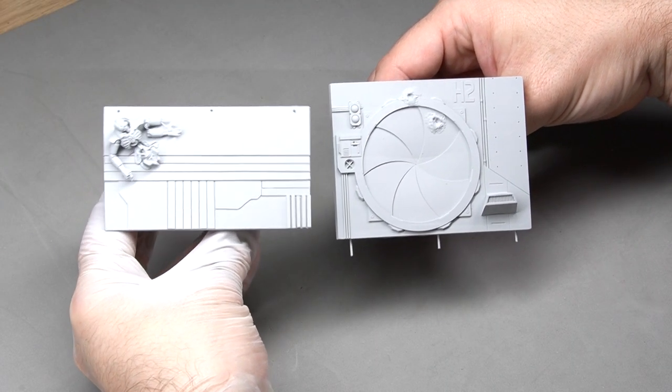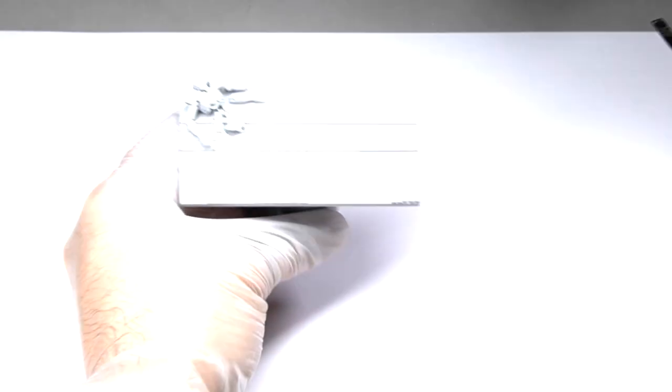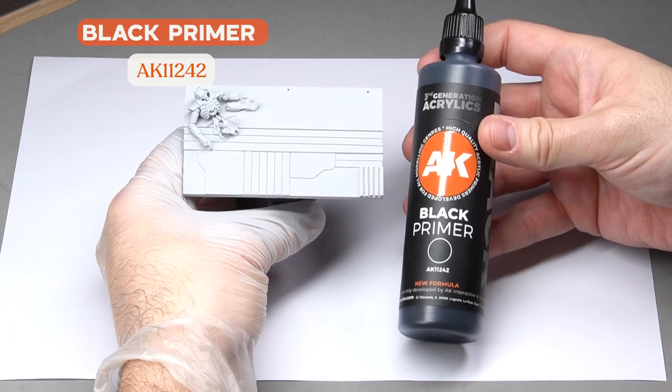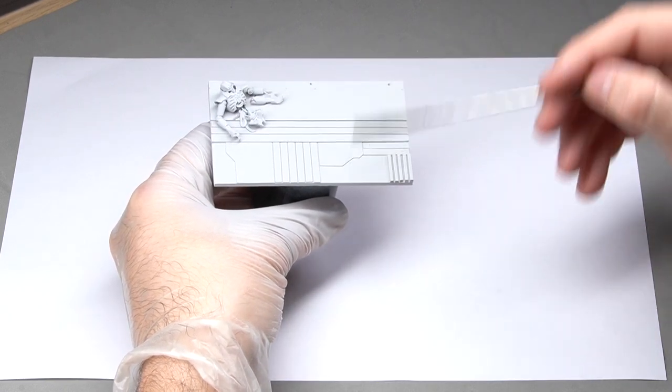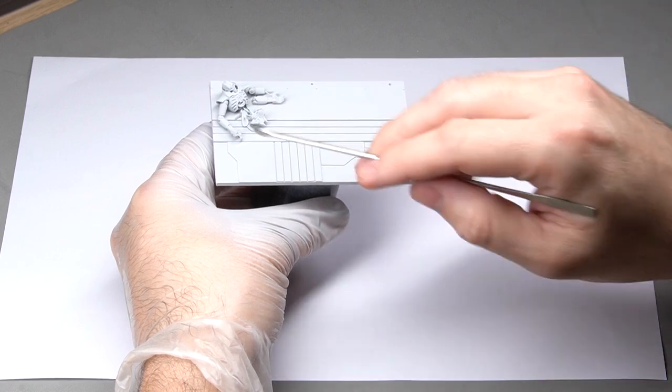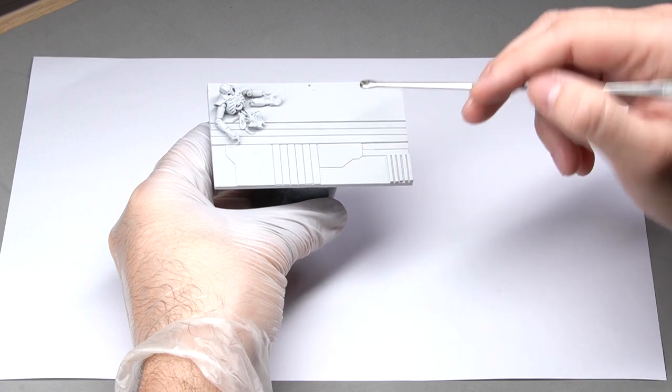This way all the elements we paint from now on will have the same tone. Using the black primer, we're going to apply pre-shading to the piece. This will help emphasize the depth between the panels and create a sense of relief.